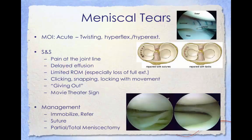A meniscus tear is usually caused by twisting or turning quickly, often with the foot planted while the knee is bent. Meniscus tears can occur when lifting something heavy or playing sports. As you get older, the meniscus gets worn and can tear more easily. Signs and symptoms include pain at the joint line, delayed effusion, limited range of motion especially a loss of full extension, clicking, snapping, or locking with movement, feeling like the joint is giving out, and movie theater sign — knee pain after prolonged sitting. Management includes immobilization and referral; small tears may be managed conservatively, while more serious tears may require surgery including suturing, or meniscectomy if the avascular portion is damaged.